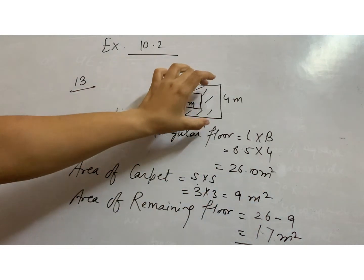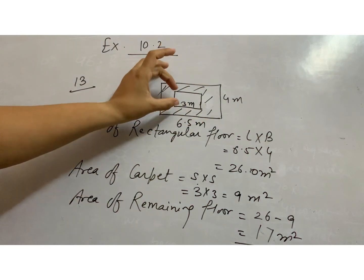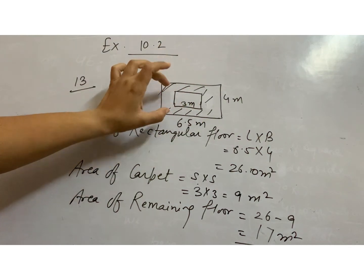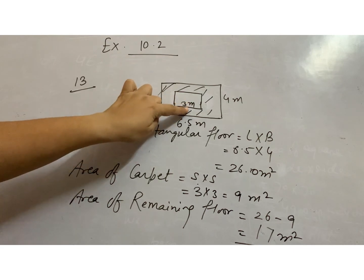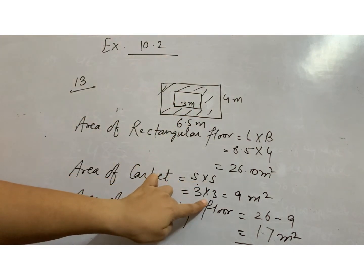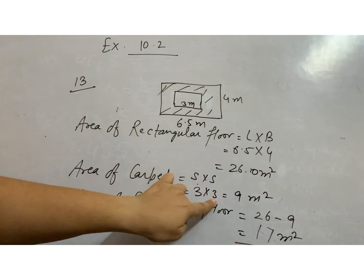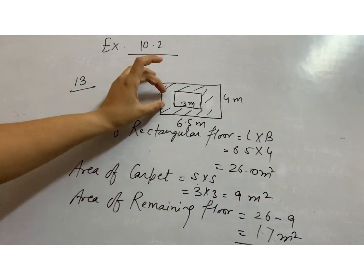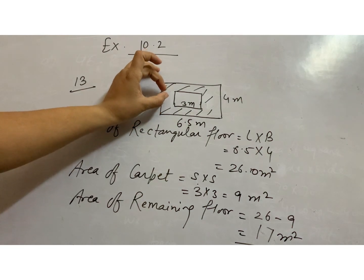In this rectangular floor we are just laying the square carpet whose side is 3 meters. So area of the carpet is 3 into 3, 9. So we have to find out the remaining area where we do not spread the carpet.